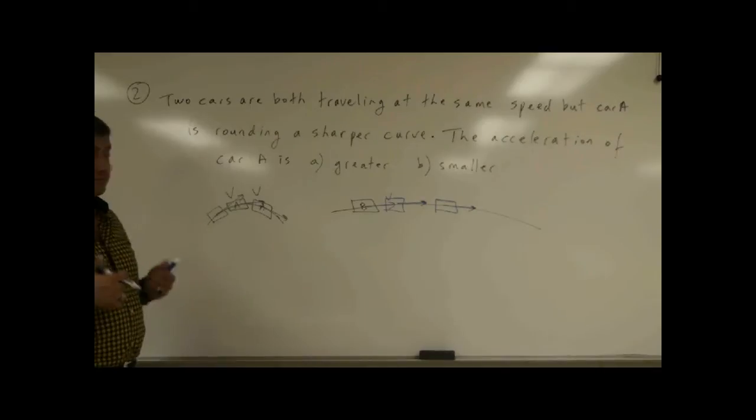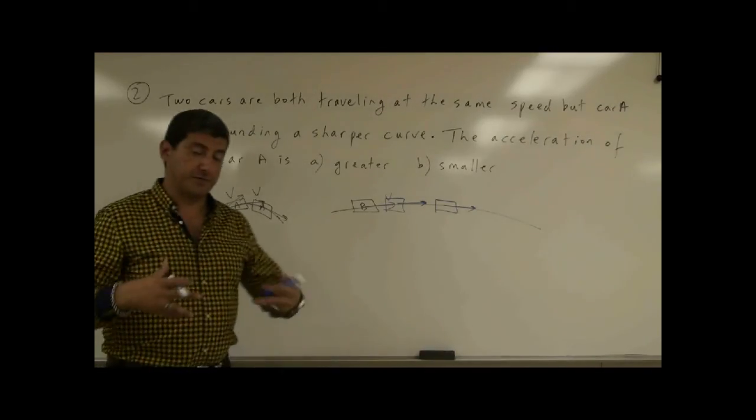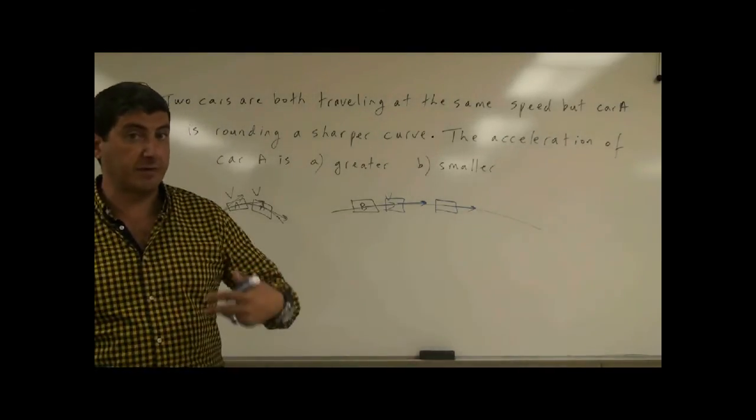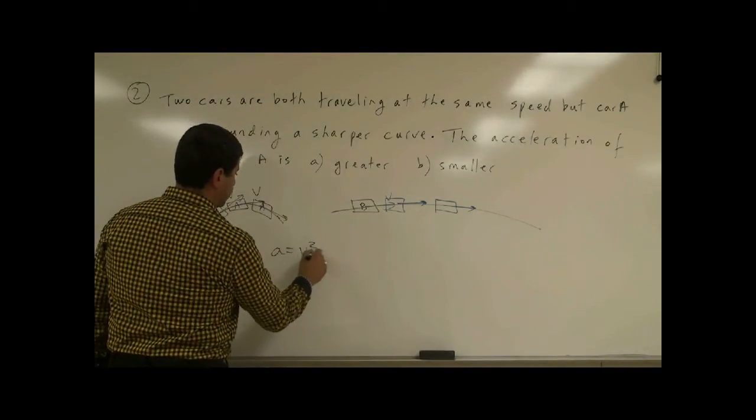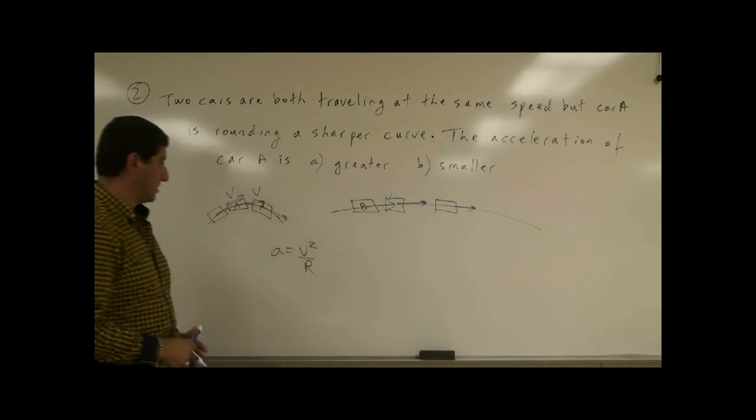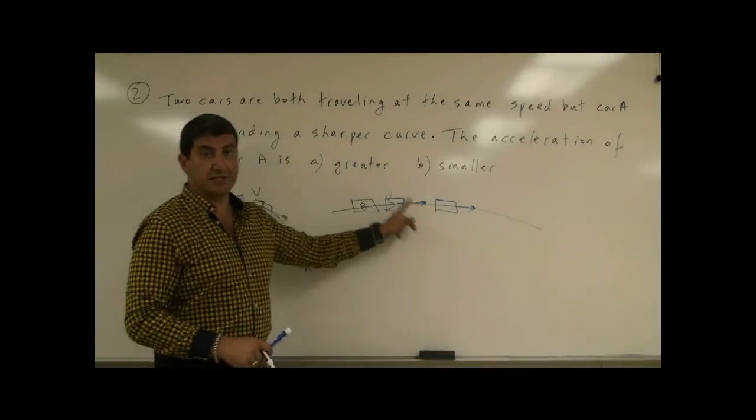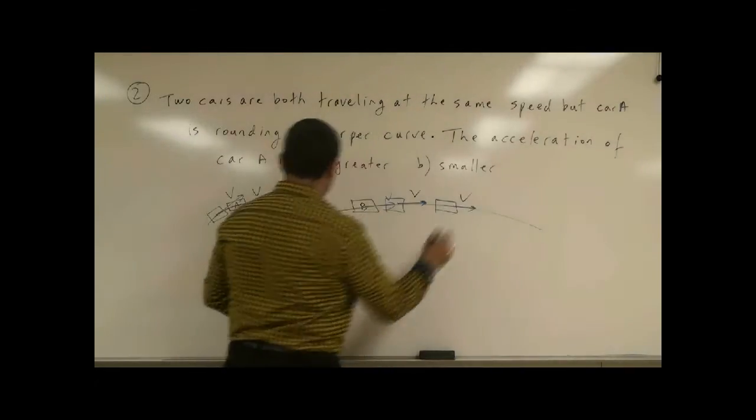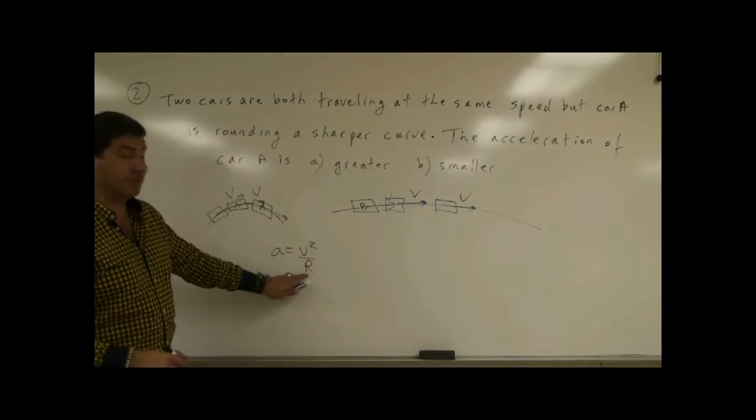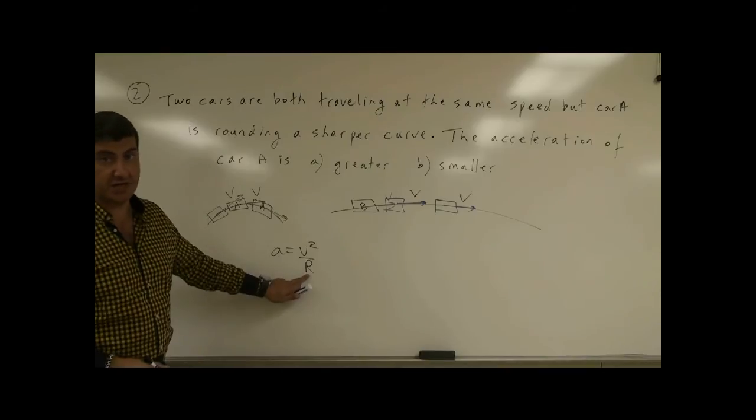If you want to explain this from a formula perspective, we can say the acceleration of an object is velocity squared over radius. Even if the two velocities are the same, if their two speeds are the same, their radius of curvature is not the same.